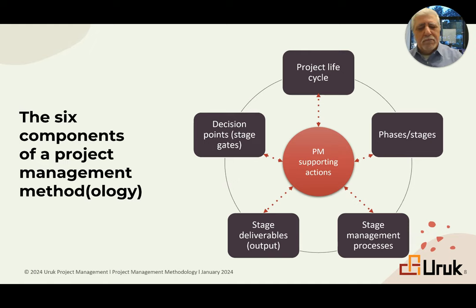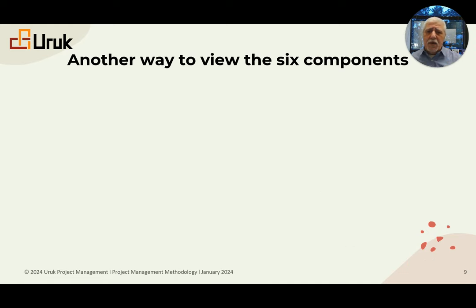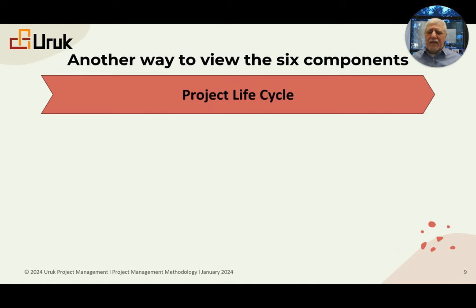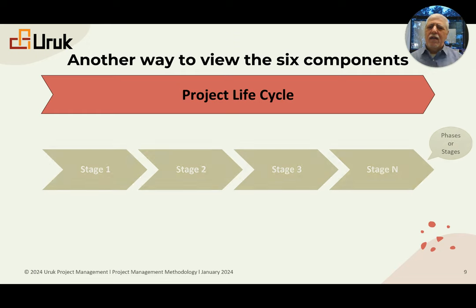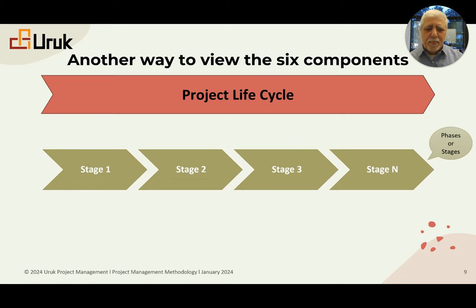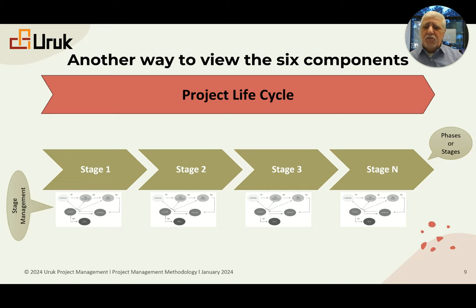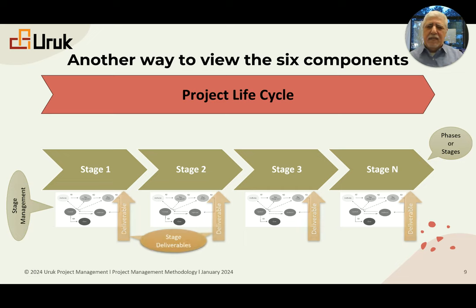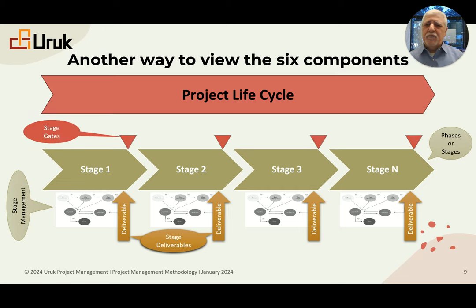Another way of viewing this: across the project life cycle from vision to reality, you have stages or phases. We manage every stage using stage management, produce stage deliverables, and pass through stage gates. These are the five components, with the sixth — supporting actions covering scope, cost, risk, quality, and so on — woven throughout. This is what a project management method should look like.